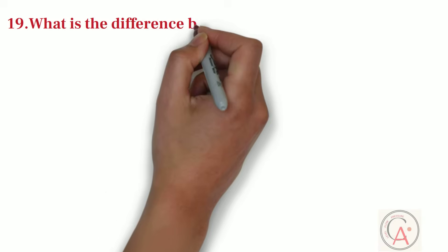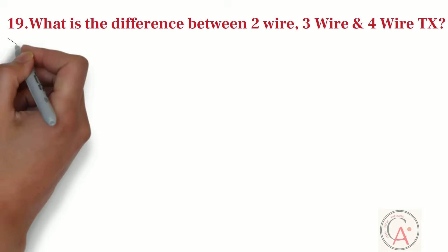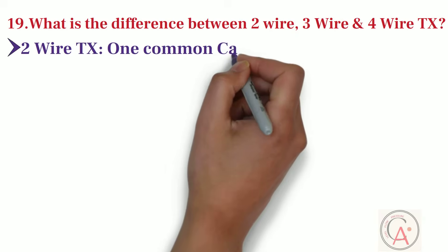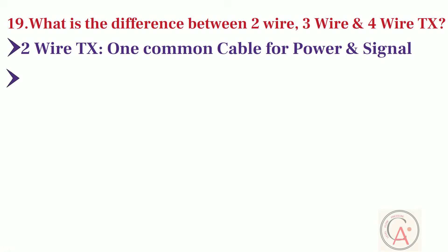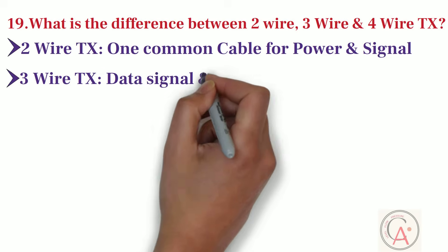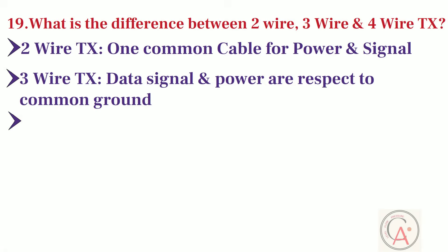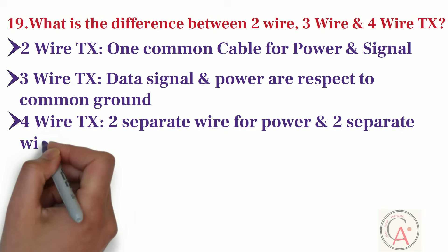Now, the most important question is, what is the difference between two-wire, three-wire and four-wire transmitter? In a two-wire transmitter, there is one common cable for power and signal. While in three-wire transmitter, data signal and power are respect to common ground. And in four-wire transmitter, two separate wire for power and two separate wire for signal.